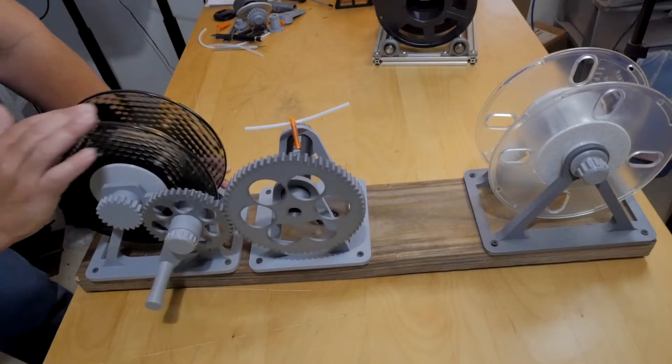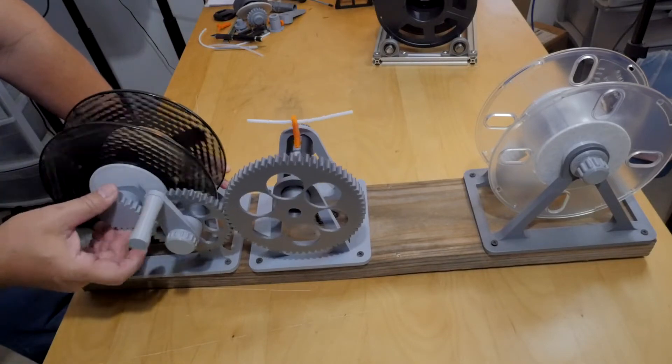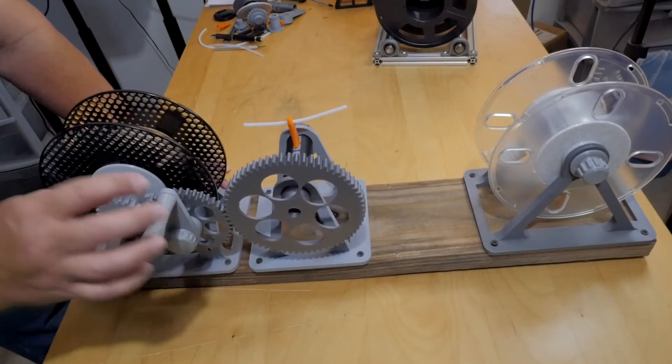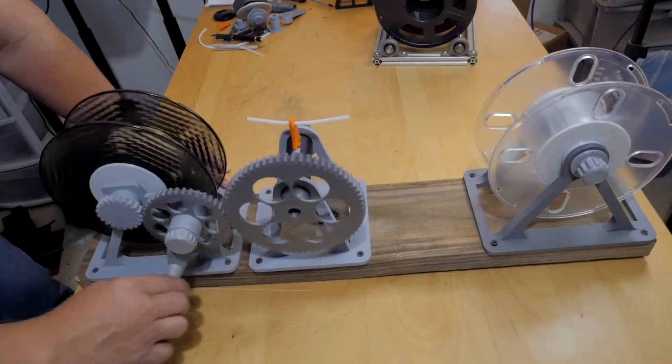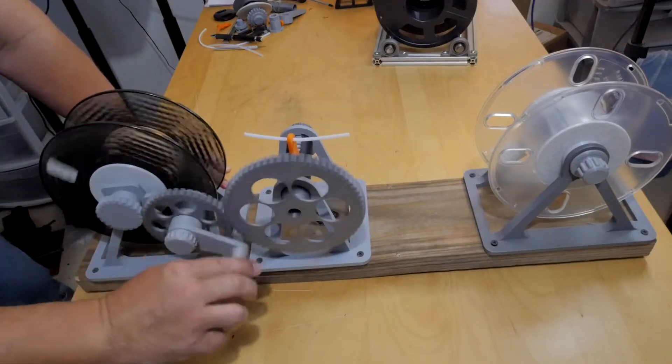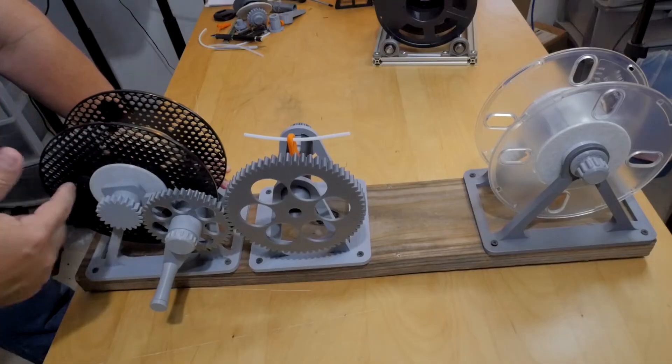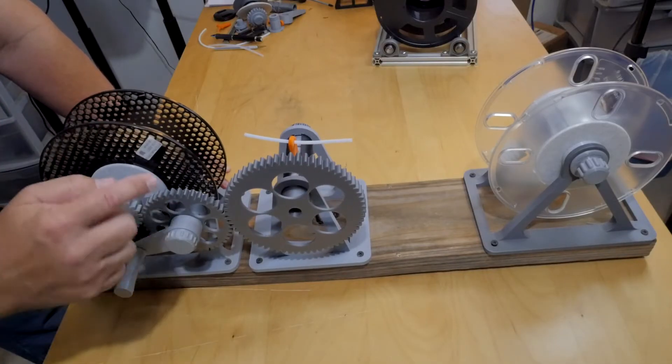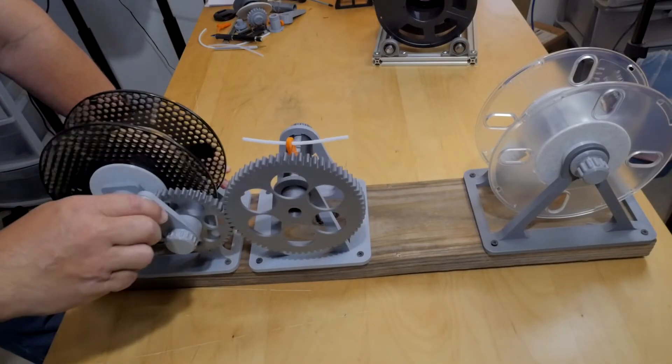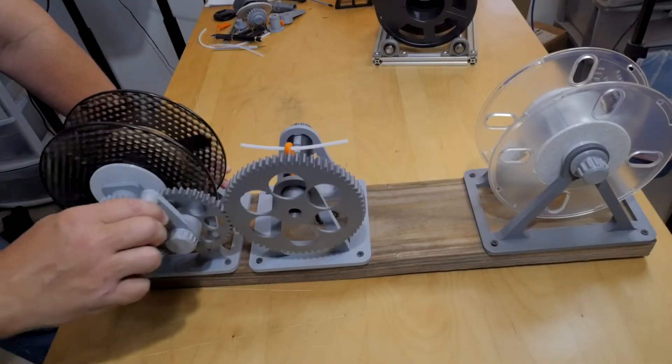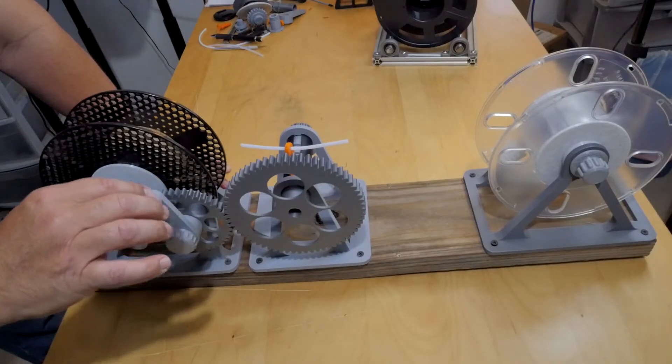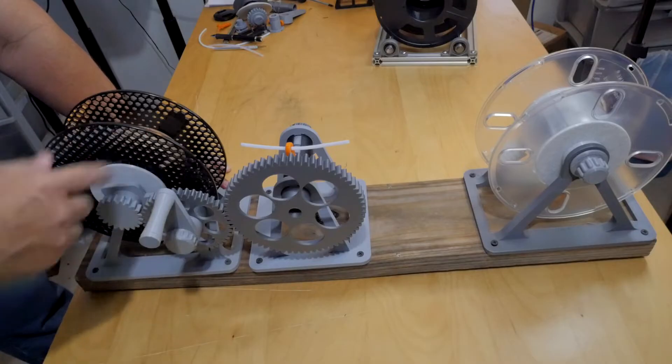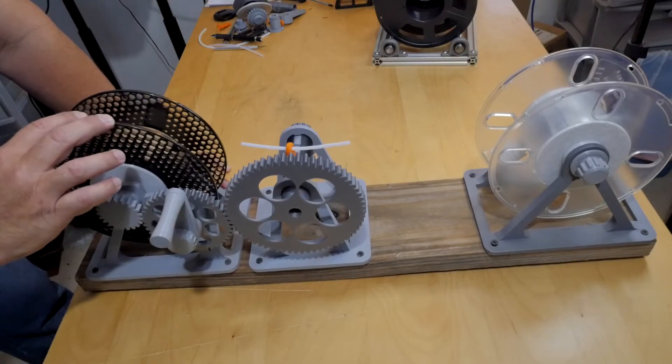Here's the driven gear where the spool is going to go into. By cranking on this handle clockwise, the spool goes counterclockwise and it's a two-to-one ratio. Every one turn of the handle is two turns on the driven spool.